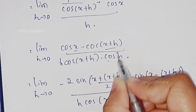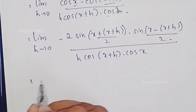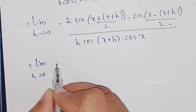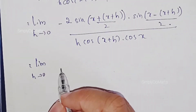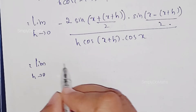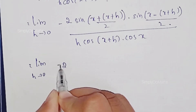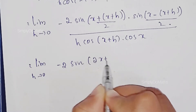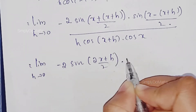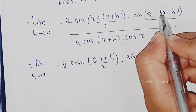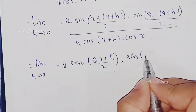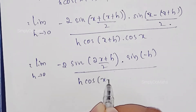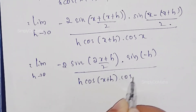This can be written as limit as h tending to 0: minus 2 times sin of 2x plus h divided by 2, into sin of minus h divided by 2, all divided by h into cos of x plus h into cos x.